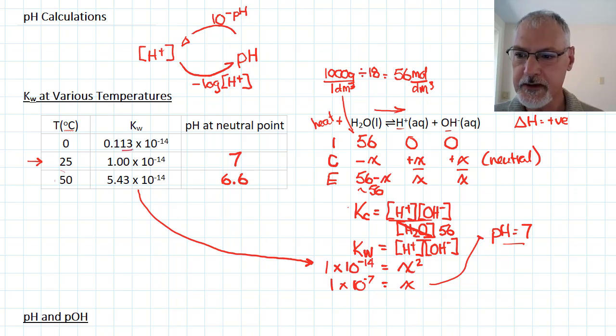Conversely, if I put this value in for Kw at 0, I get, moving in the other direction, I get a neutral pH of 7.4. So that value that we've been taught for a long time, pH 7 is neutral, really only holds true at 25 degrees Celsius. Change the temperature, you change the value of that neutral pH.